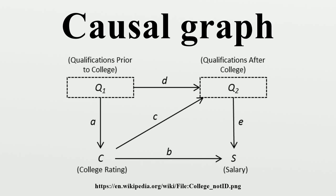For example, suppose we wish to estimate the effect of attending an elite college on future earnings. Simply regressing earnings on college rating will not give an unbiased estimate of the target effect, because elite colleges are highly selective and students attending them are likely to have qualifications for high-earning jobs prior to attending the school. Assuming that the causal relationships are linear, this background knowledge can be expressed in a structural equation model specification.